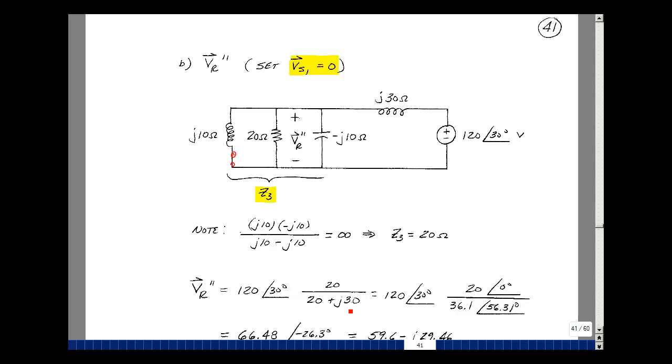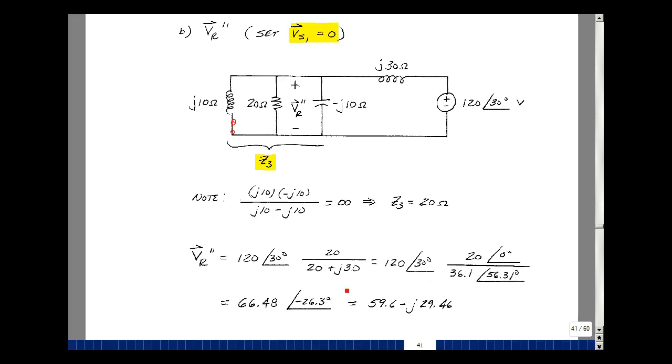This is just 20 at angle zero. And again, I'm just going to put this in my calculator. I'll get a length a little bit longer than 30. That looks about right. I'm going to be in the first quadrant with an angle greater than 45 degrees because this is longer than this. So 120 times 20 divided by 36.1 is 66.48. And then the angle is 30 plus zero minus 56.31, and that's a negative 26.3.